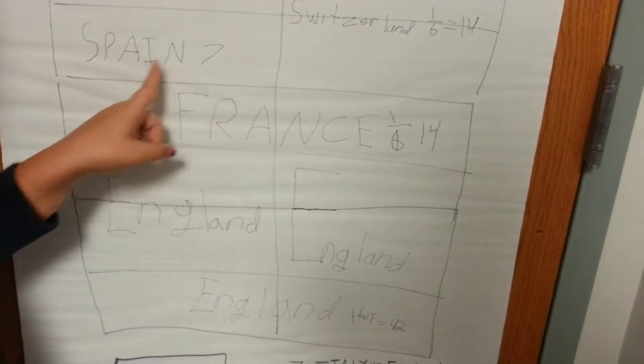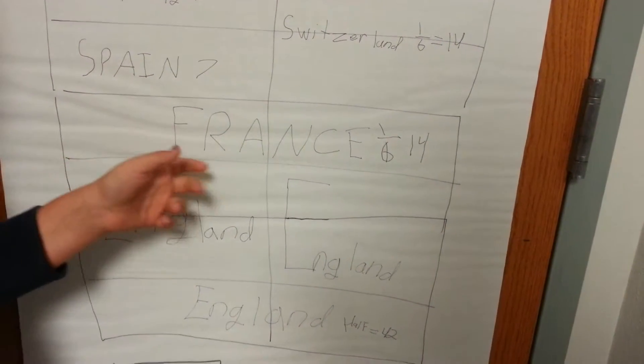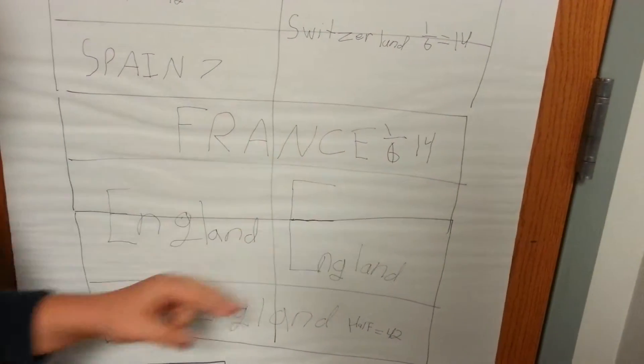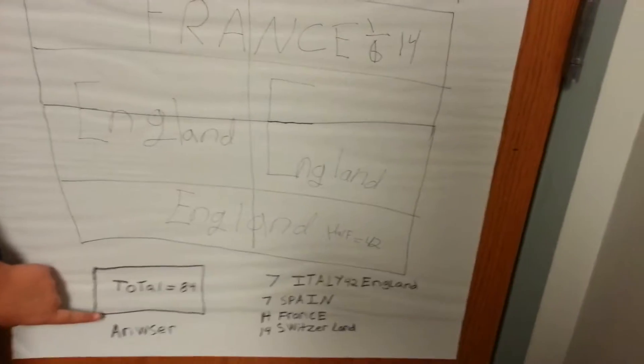Spain is seven, which also equals one twelfth. France is one sixth, which equals fourteen. England is one half, which equals forty-two. The total is eighty-four.